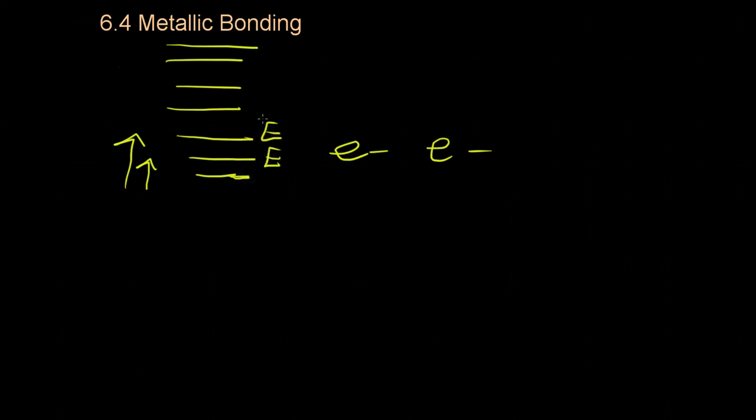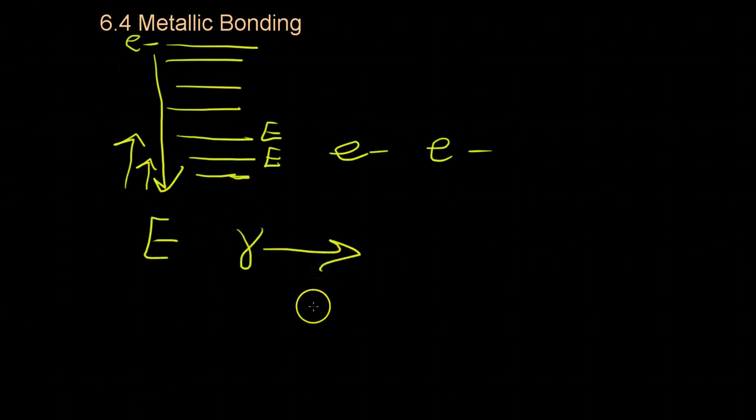And so, what ends up happening in metals is that, because there are so many electrons with so many options, metals can absorb a wide range of frequencies of light, and then these electrons, which are then excited, will quickly go back down to their ground state, dissipating this energy as a photon of light that comes away from metal. And this is why metals tend to be shiny, very reflective, and lustrous.